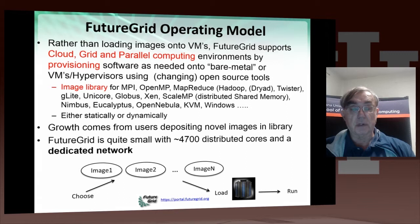It is worth emphasizing that FutureGrid is small, with only 4,700 distributed cores, and it has an almost dedicated network, which we'll find out more about when we look at the hardware in more detail.